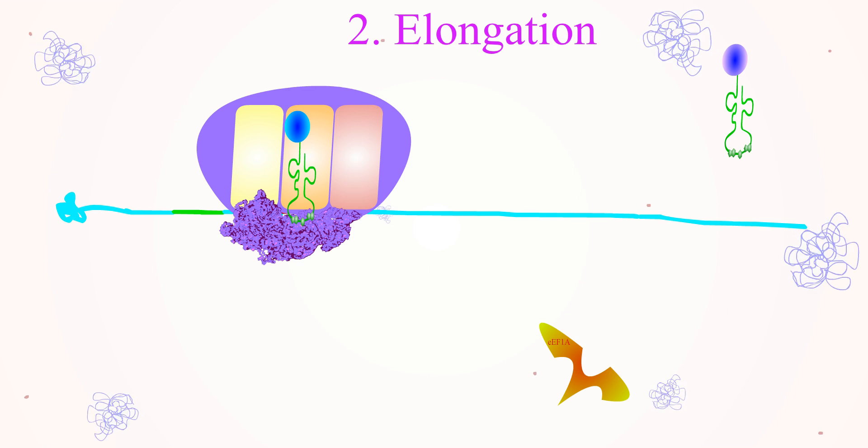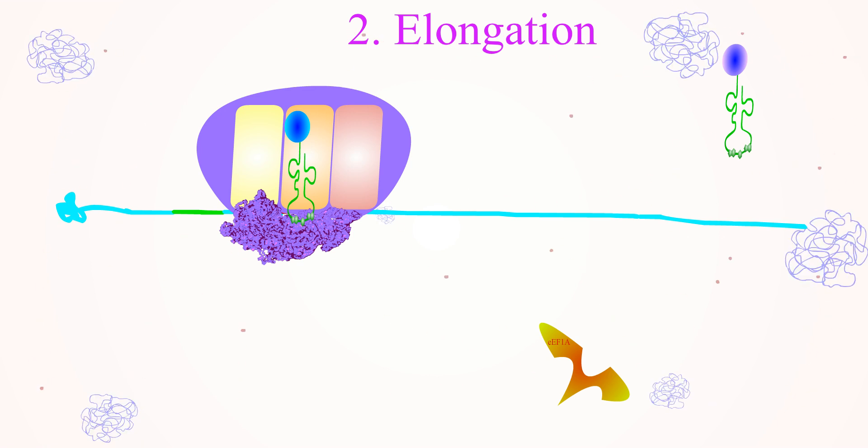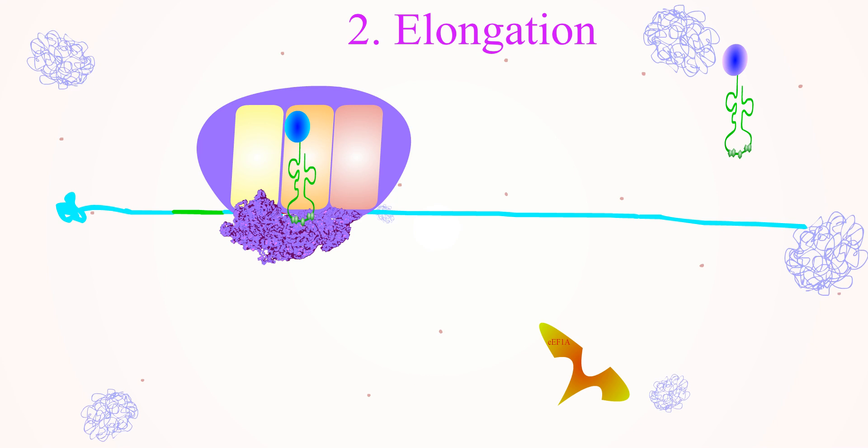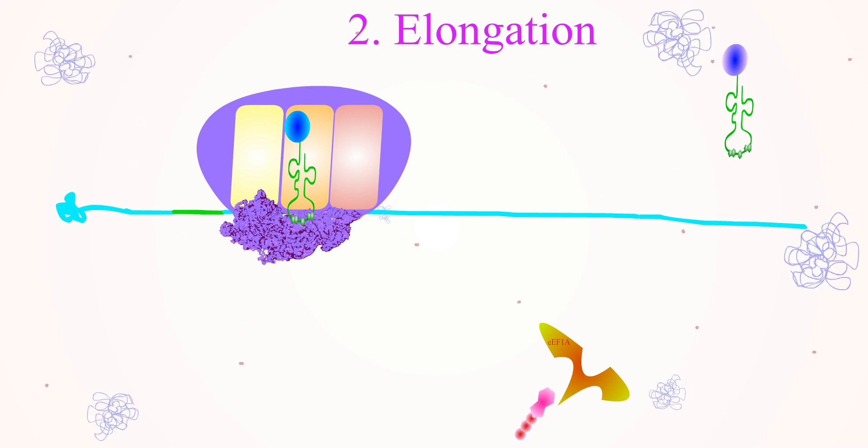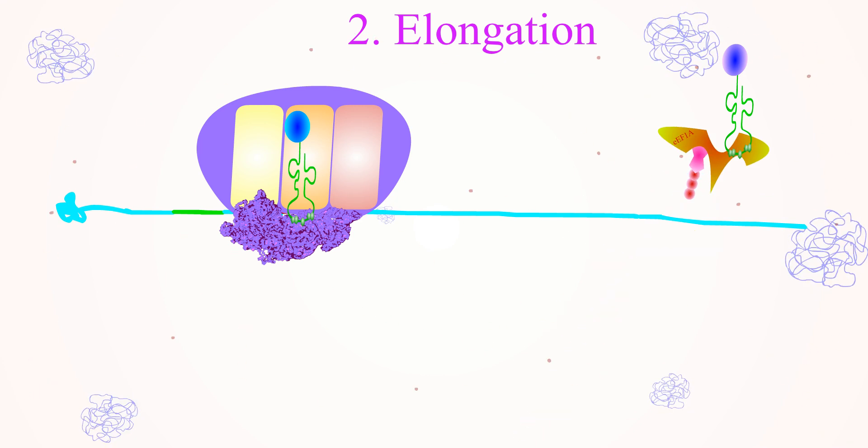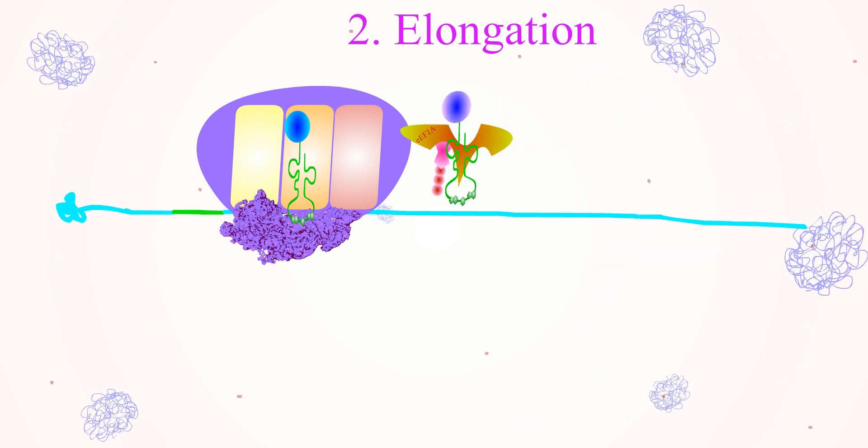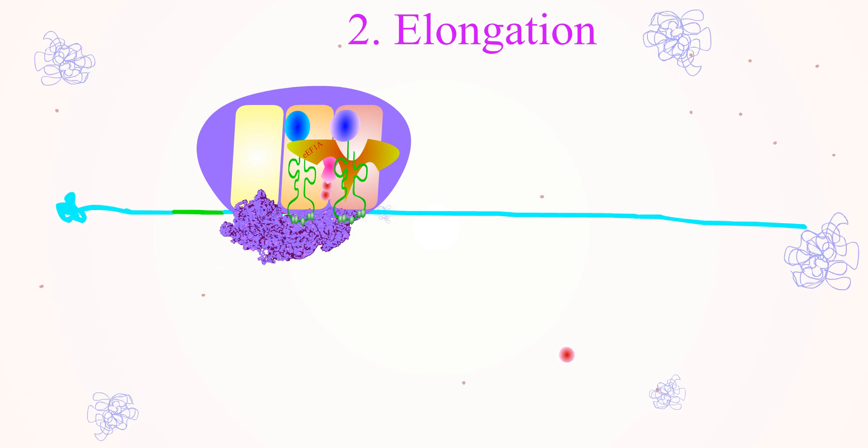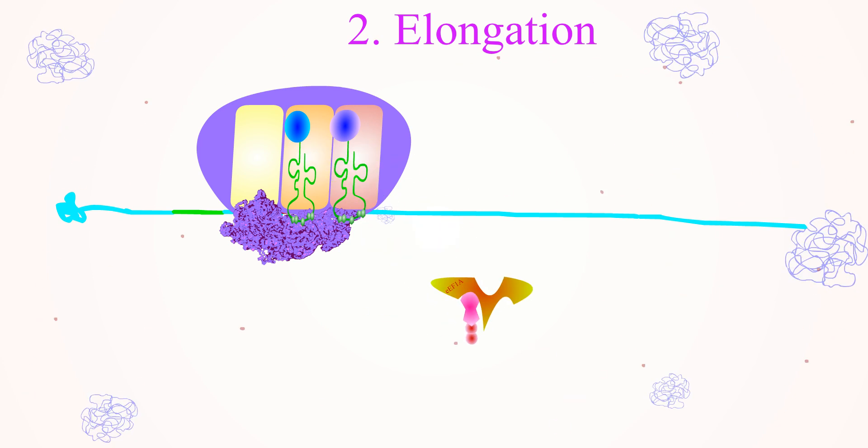During elongation, the 80S ribosomal complex will be positioned with mRNA in such a way that it can read the next codon. The initiator tRNA will now occupy the P site of the ribosome, and the corresponding aminoacyl tRNA to the next codon will be positioned in the A site of the ribosomes.